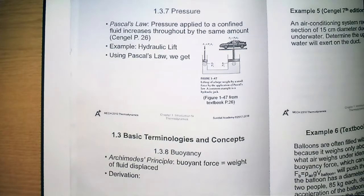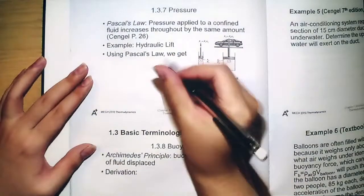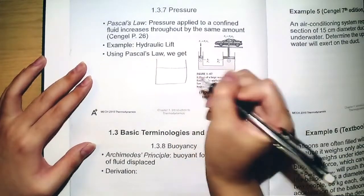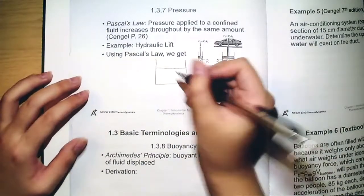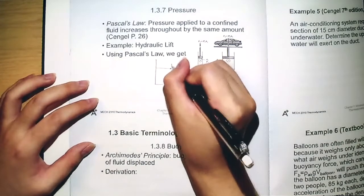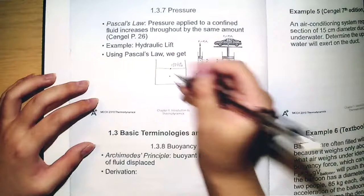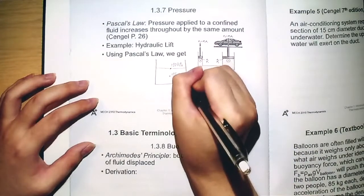It states that the pressure applied to a confined fluid increases throughout by the same amount. That means if a piston cylinder containing water has pressure shown in this figure, let me draw that out. Suppose you have a tank of water, here is 100 kilopascal, for example, and at some depth it will be 105 kilopascal.